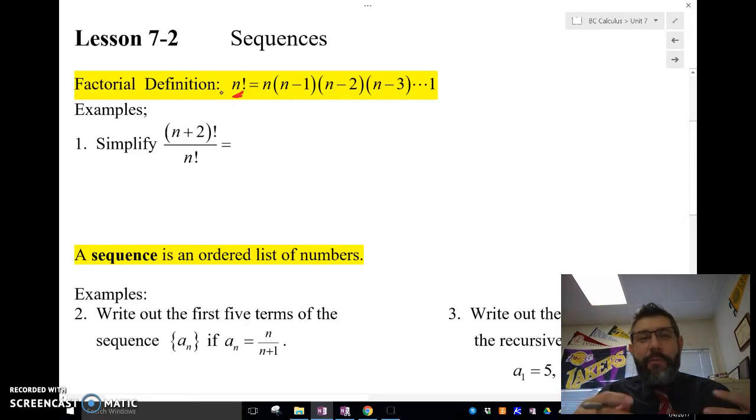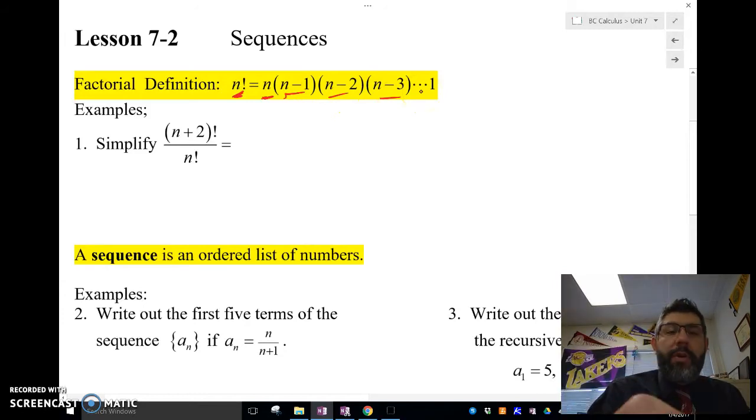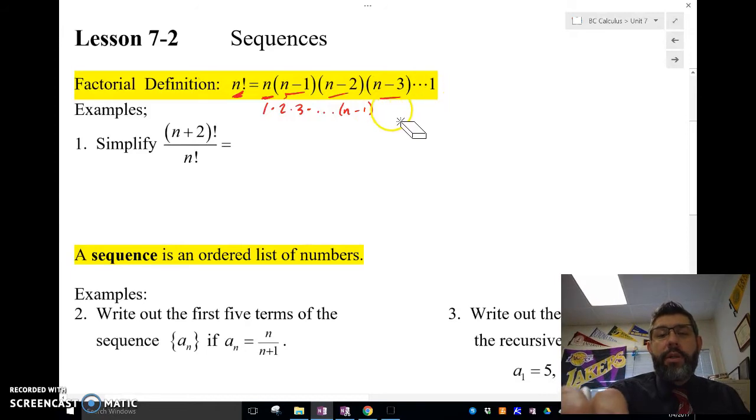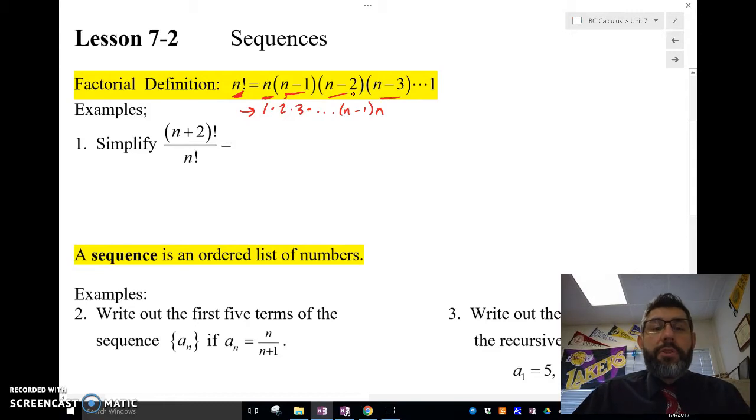It's a factorial, and a factorial is basically you're going to start at n and you're going to multiply it by going down one integer each time. You can also flip it around. I know that some teachers have done 1 times 2 times 3 times dot dot dot n minus 1, n. Either way you write it is going to be okay. I like to write it this way, just starting at one and going up, but you can go down as well. So let's go ahead and simplify (n+2)! over n!. In these cases it's kind of actually nice to start from the top and go down.